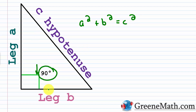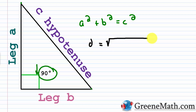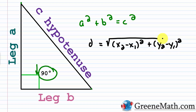We can use the Pythagorean theorem to come up with the distance formula to find the distance between two points when the two legs are known. If you know the two legs, which are easy to find on a coordinate plane, then you can easily find the distance between two points, which would be your hypotenuse. So the distance d equals the square root of (x₂ − x₁)² + (y₂ − y₁)².